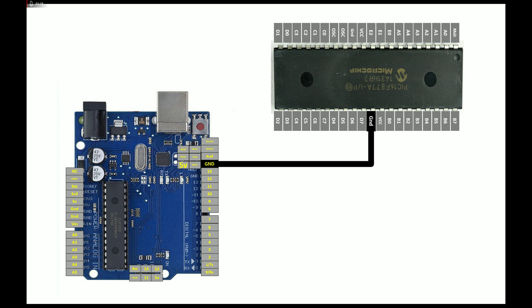The ground goes to the ground of the Arduino - they must share a common ground. On the PIC16F877A the TX pin is C6, that is pin number 25, and this goes to the RX pin of the Arduino Uno. You may use a software serial library as well, but I recommend using the hardware pins. TX of PIC goes to RX of Arduino - that is the only connection needed.